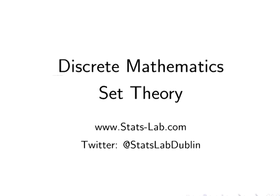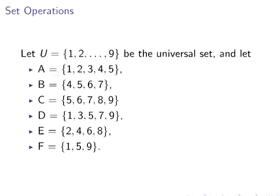In this presentation we are going to look at some set operations, in particular union and intersection. Let U, the universal set, be the integers 1, 2, 3, 4, 5, 6, all the way up to 9. We're going to define six subsets: A, B, C, D, E, and F, and answer some questions on them.